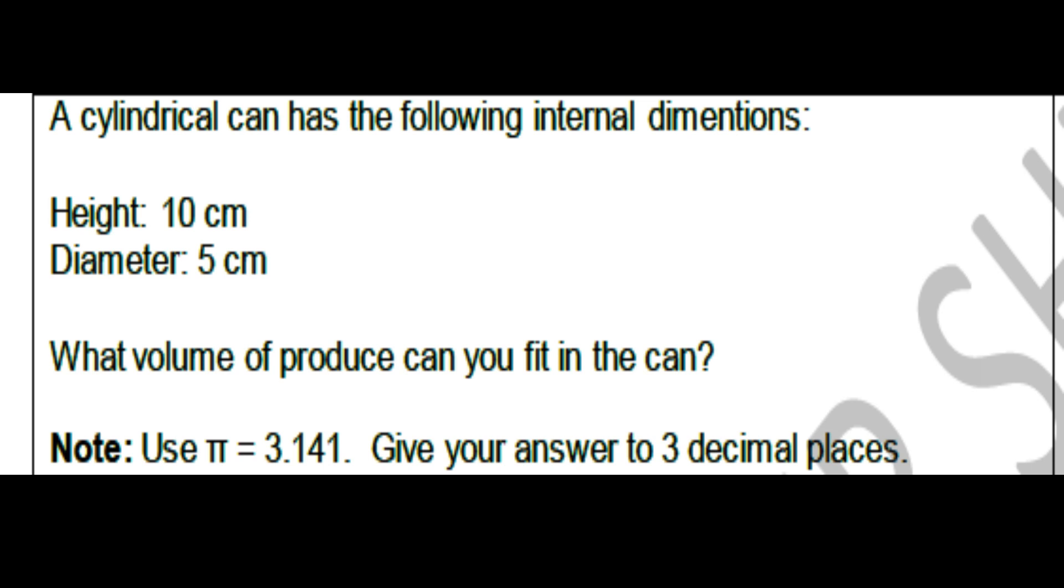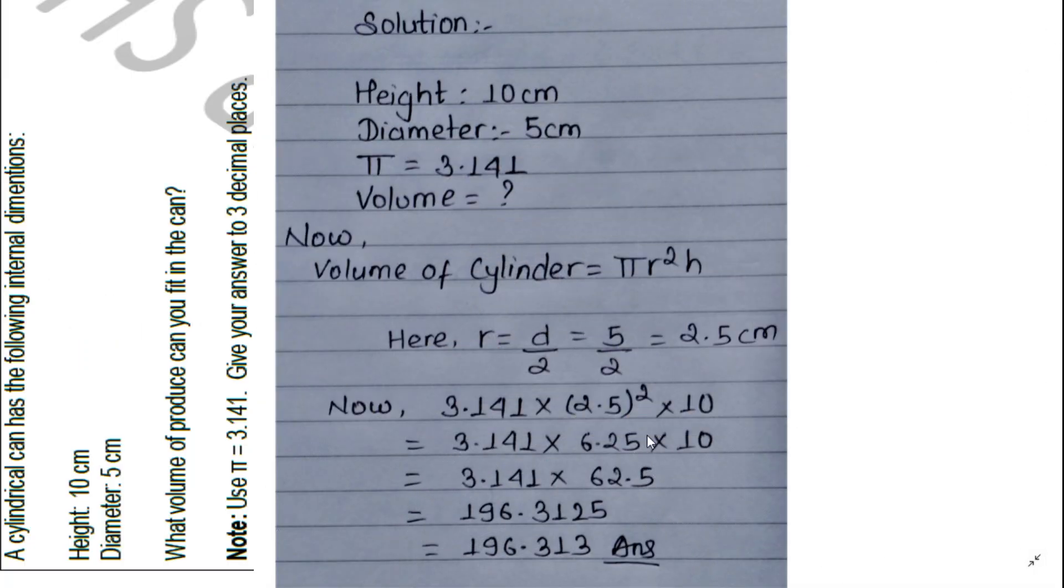Last question: A cylindrical can has the following internal dimensions: height equals 10 centimeters, diameter 5 centimeters. What volume of produce can you fit in the can? Note: use pi equals 3.141, give your answer to three decimal places. The volume of a cylinder is pi r squared h. Here r equals d divided by 2, which equals 5 divided by 2 equals 2.5 cm.